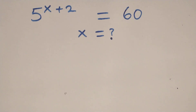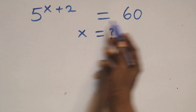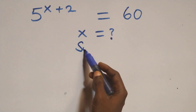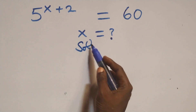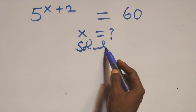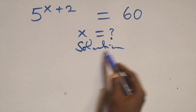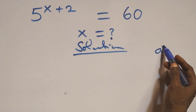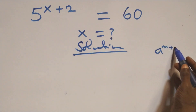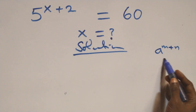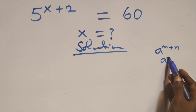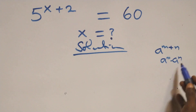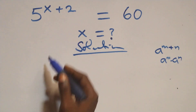Hello, you're welcome. Here we solve a nice exponential equation. We use the rule that a raised to power n plus n is the same thing as a raised to power n times a raised to power n.